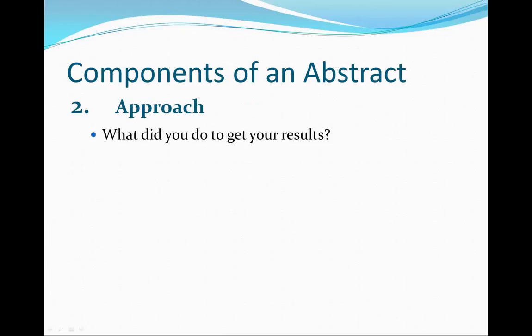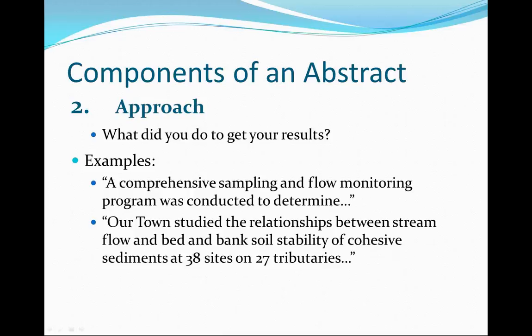The second component is the approach — this is where you explain what you did to get your results. There's a wide variety of things that people do here. You might have a technical presentation where you actually did some sampling and testing, or you may have just evaluated some different concepts. Some examples are: 'A comprehensive sampling and flow monitoring program was conducted,' or 'Our town studied the relationships between stream flow and bed and bank soil stability of cohesive sediments on 27 tributaries.' Using numbers, as in the second example, is a good way to go.